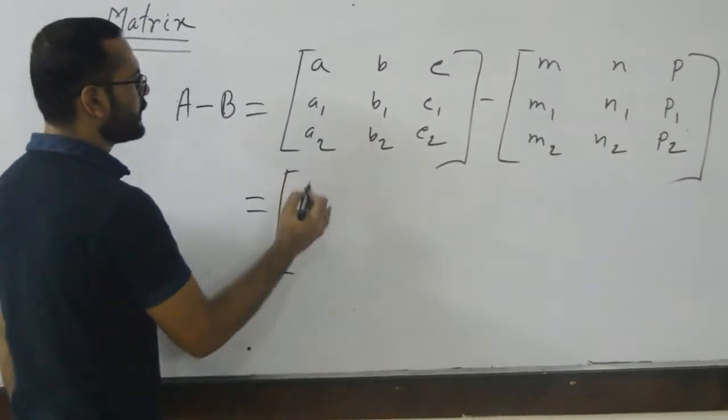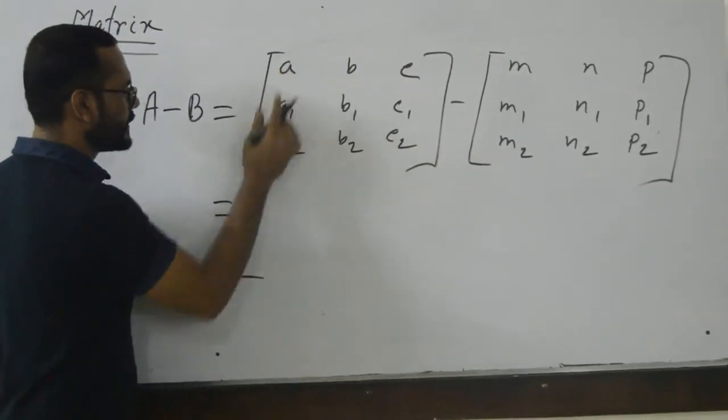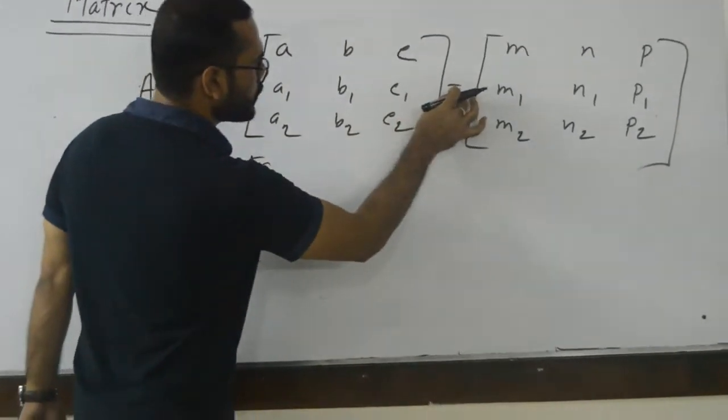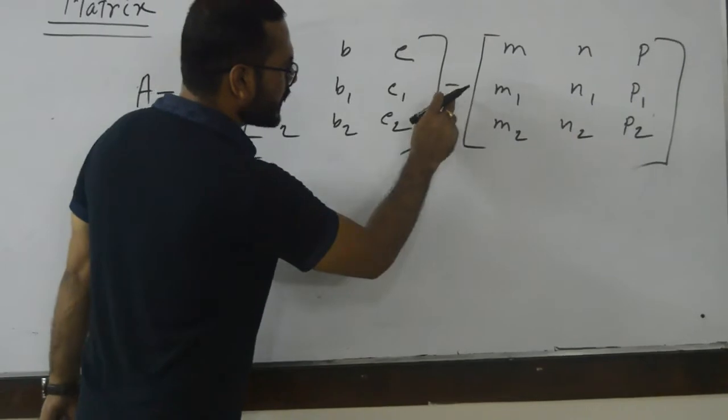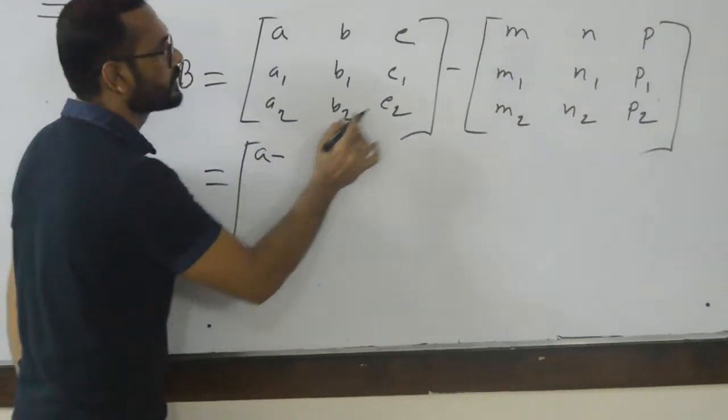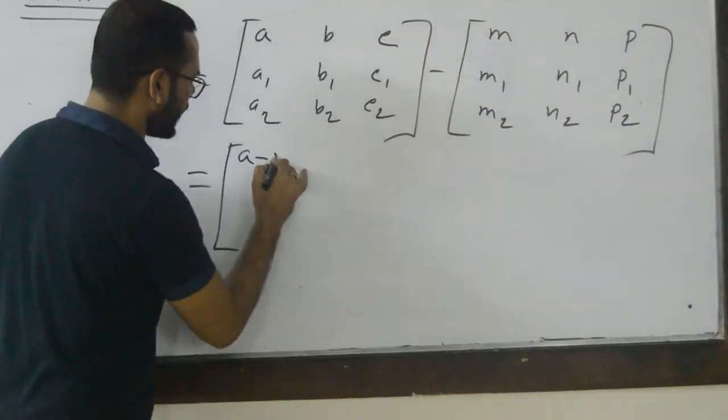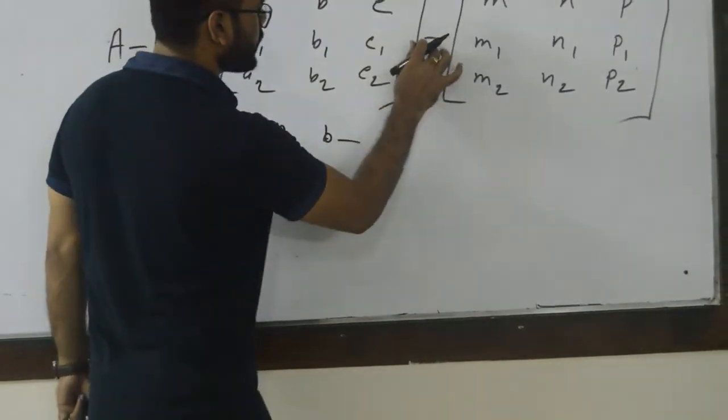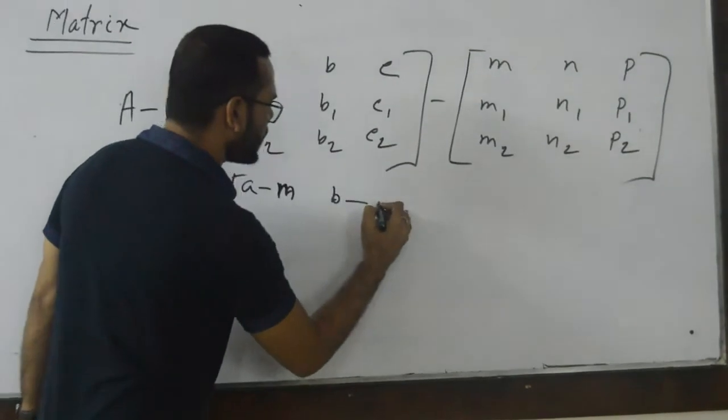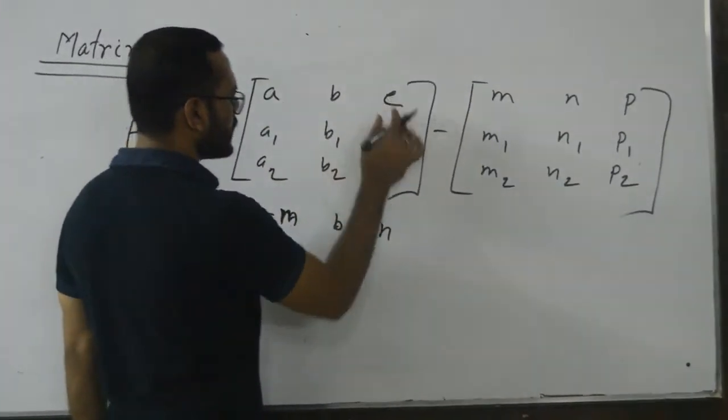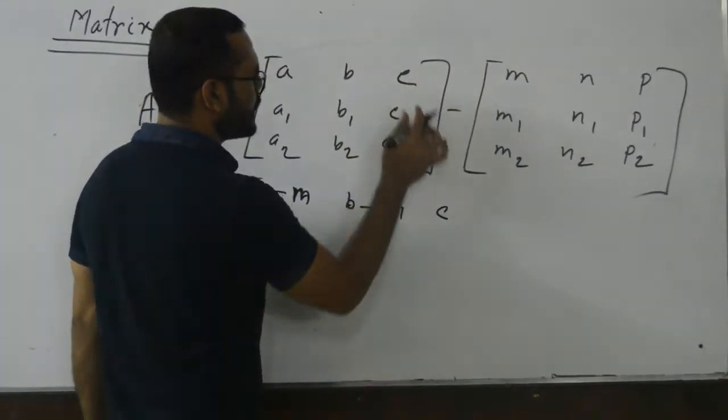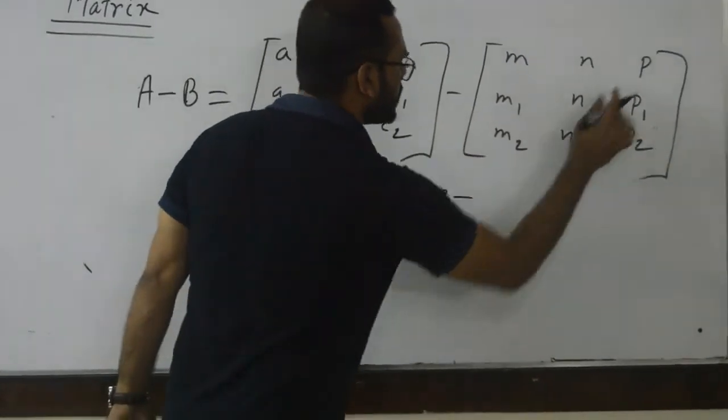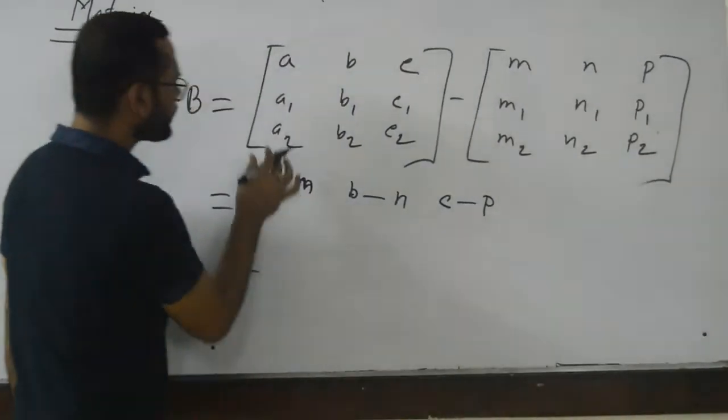After that, just as per the previous one, the first entry a. Then we need to know what is the sign here. Here minus sign is there, so minus. Then first entry of B is m. Then b, the second entry, minus, because the operation is minus here, and then the second entry of B is n. Third entry of A is c, minus third entry of B, which is p.